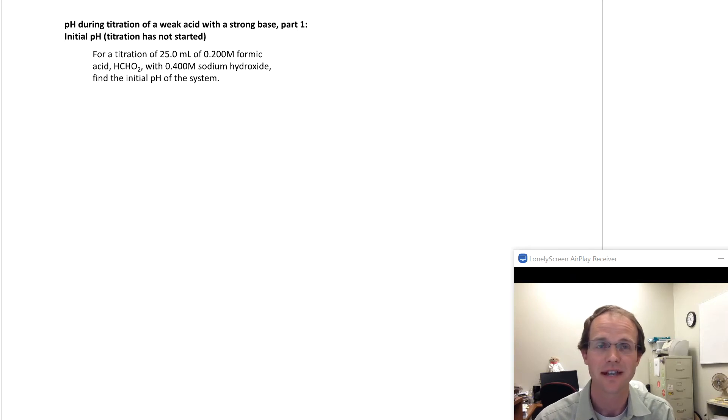Hi, I'm Professor Clements, and today the problem we're going to be working on is titration of a weak acid with a strong base. For this problem, I've chosen formic acid. We're going to titrate 25 milliliters of 0.2 molar formic acid with 0.4 molar sodium hydroxide.